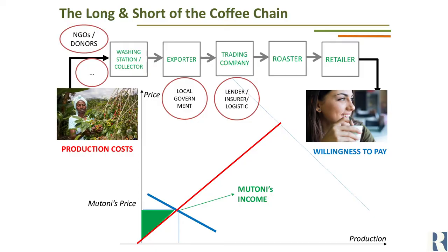Her income — the difference between her production costs and her revenues — is also not very large. It's not just small — it's also very volatile, unpredictable, difficult to understand. Maybe it comes all at harvest season, but Muttoni would like to have some of her income a little bit before, so that she can pay for inputs without having to borrow, or maybe a little bit after, so that she can pay for school uniforms for her kids.